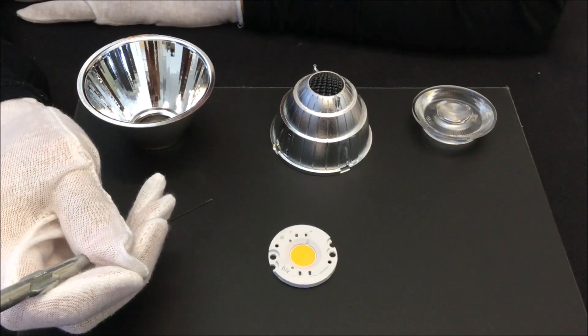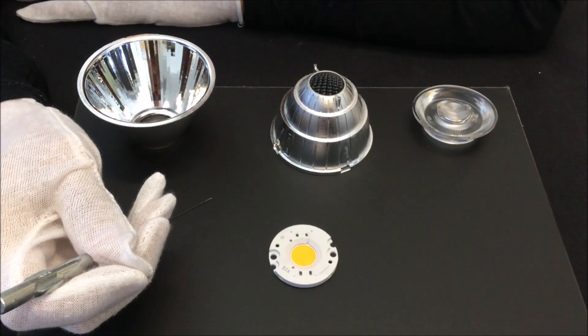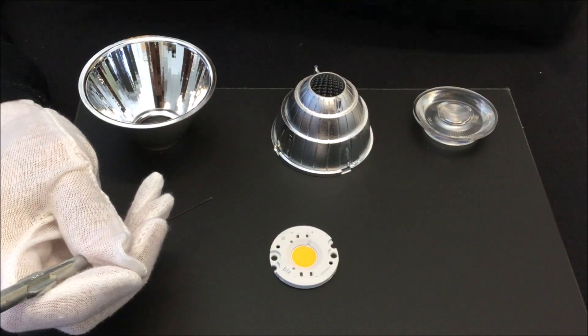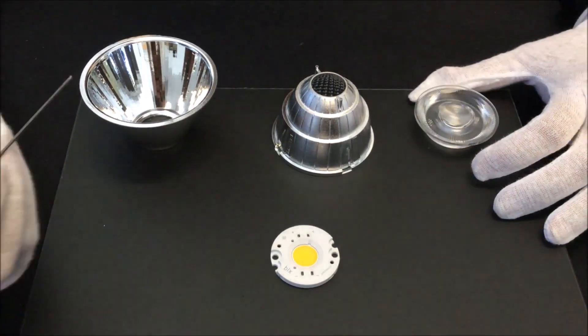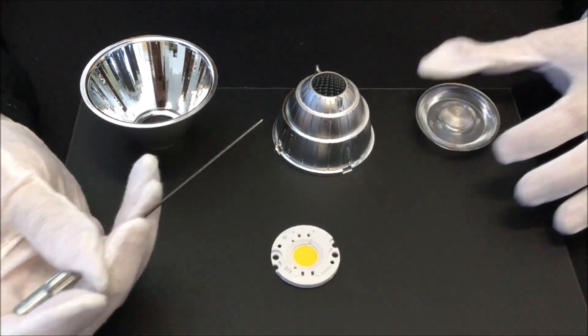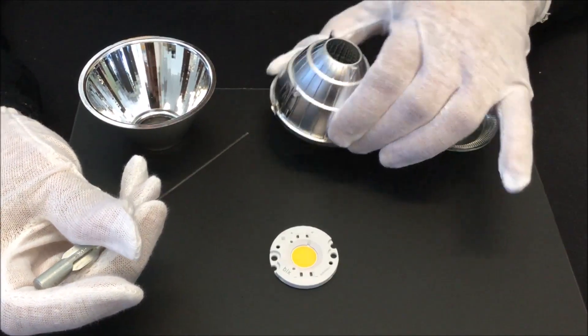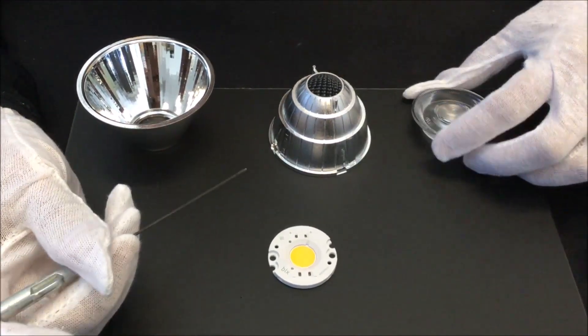However, not all optics require the use of these mounting holes for alignment. Here are a few examples. I have three optics here: one is a reflector from NATA, another is a reflector from OptoSource, and this is a collimating lensing optic from BJB.